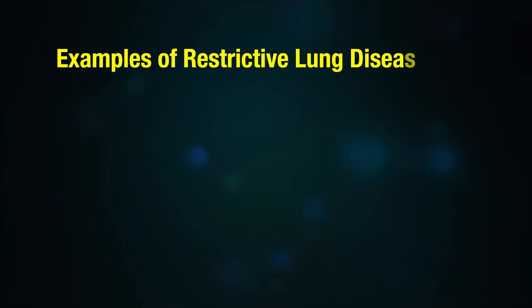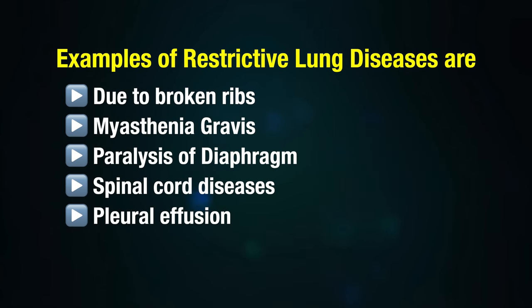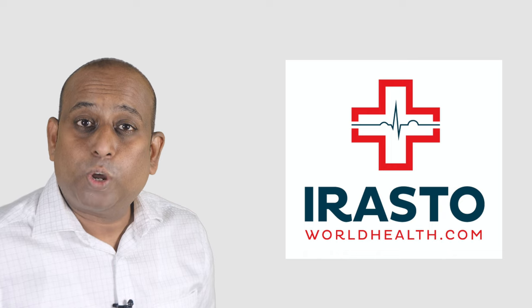Examples of restrictive lung diseases include broken ribs, myasthenia gravis, paralysis of diaphragm, spinal cord diseases, and pleural effusion.